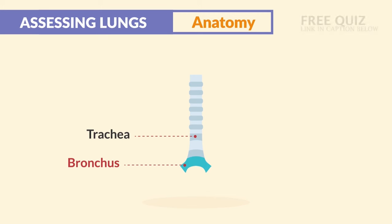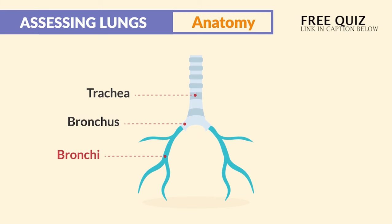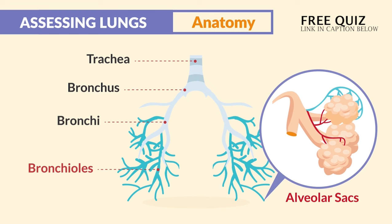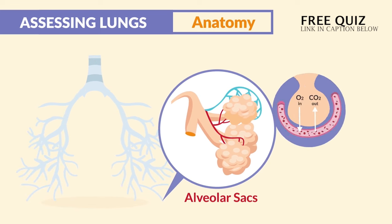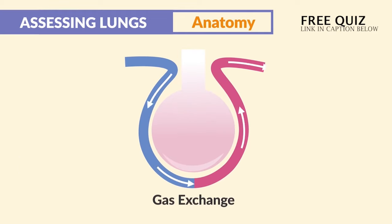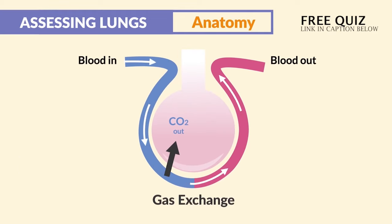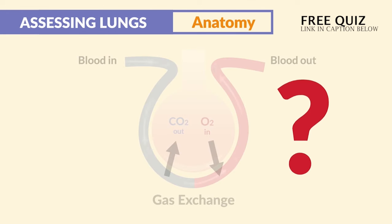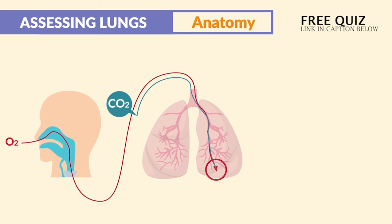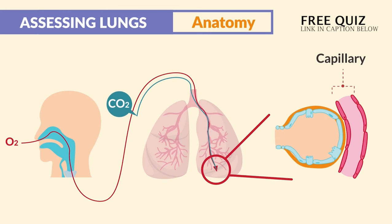The trachea branches off into the right and left bronchus, then into the smaller bronchi, and the bronchioles — the very tiny branches — eventually ending at the alveolar sacs, which are called the 'alveolar apples' because this is where all the action happens. The alveolar sac is where gas exchange occurs, exchanging CO2 for oxygen. We breathe out CO2 and breathe in oxygen, all happening in the little capillary beds of each alveolus.